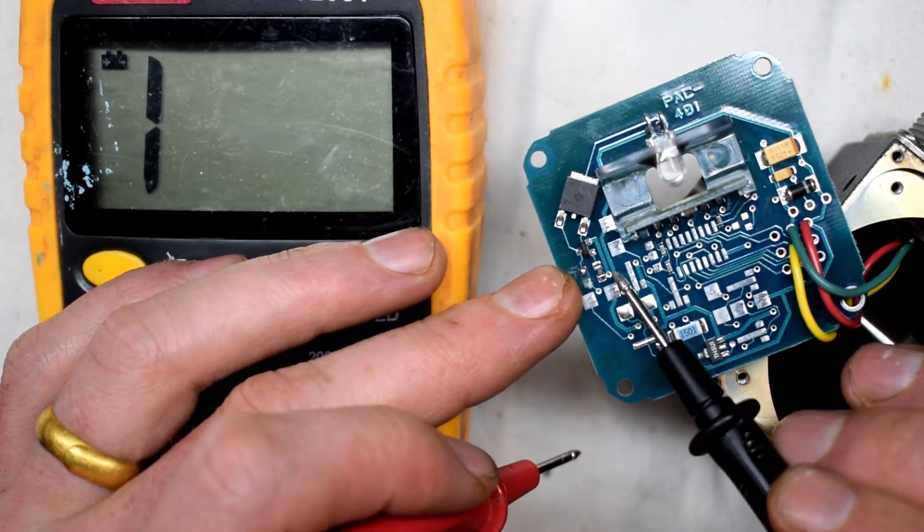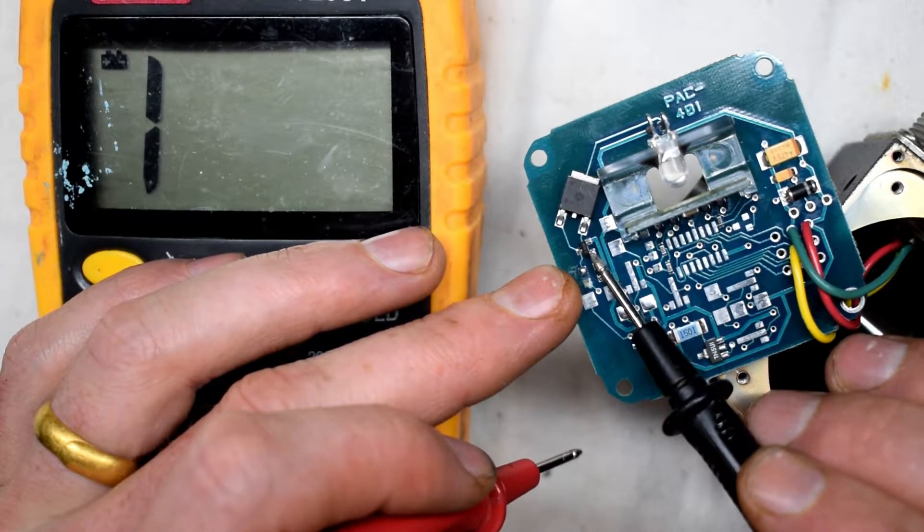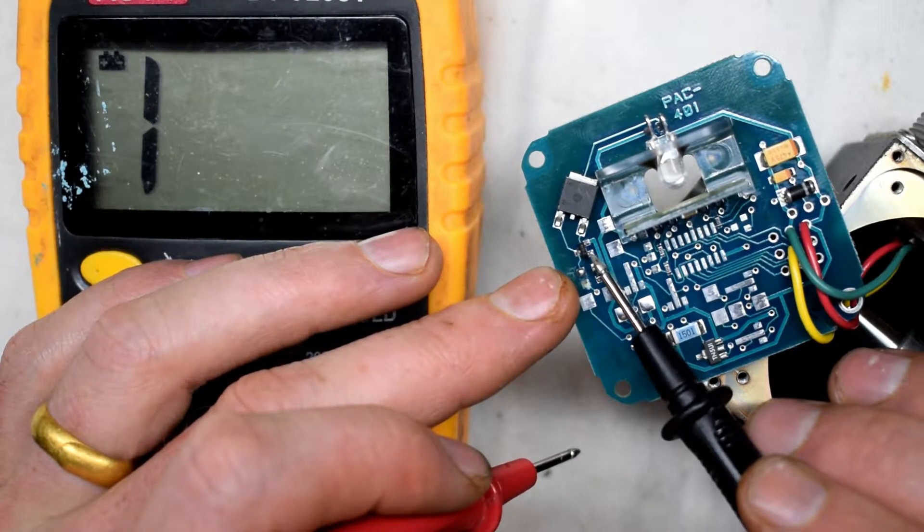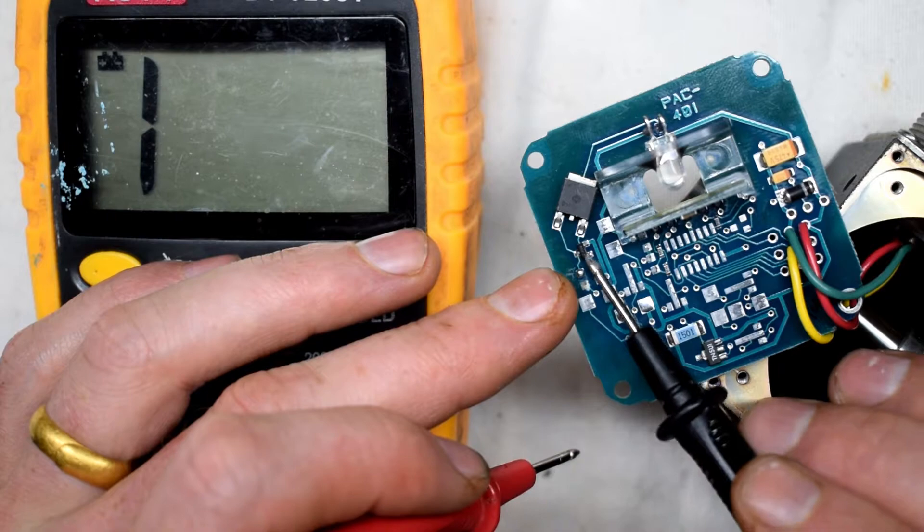This little guy right here is the other N-channel. You could just put a little N-channel MOSFET or a transistor here.